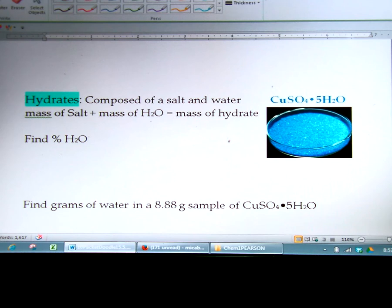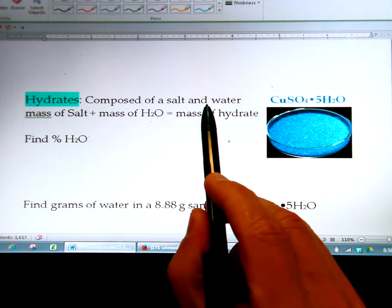Today we're on page 5 of the Chemistry 1 Chapter 10 packet and we're going to be talking about hydrates. A hydrate is composed of a salt and water.